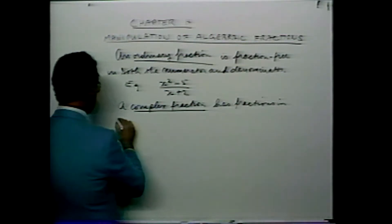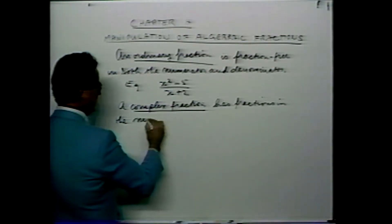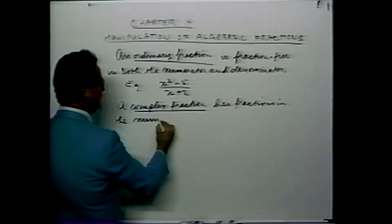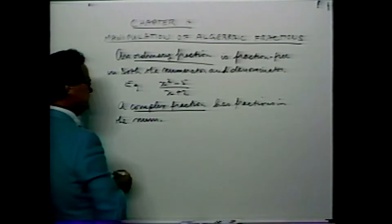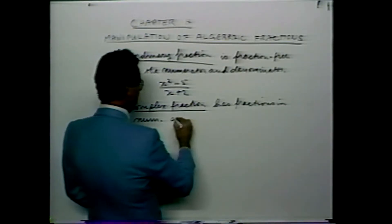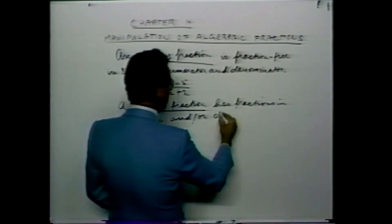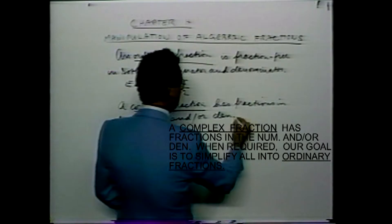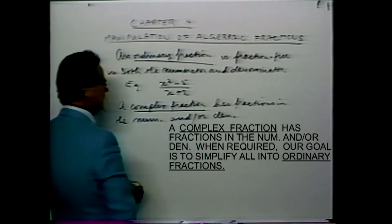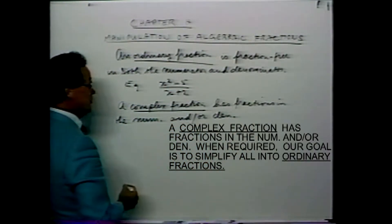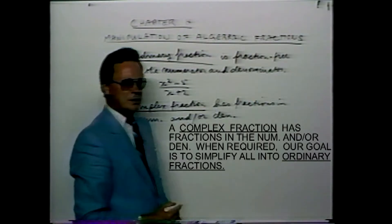For example, x squared minus 5 over x plus 2. A fraction that is complex has fractions in the numerator and or the denominator.